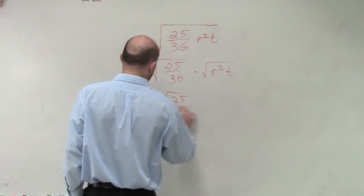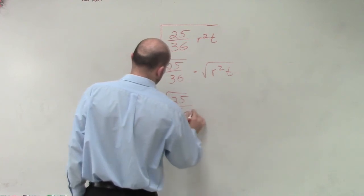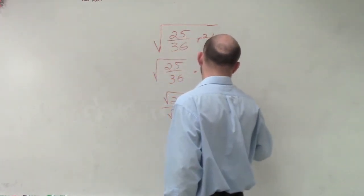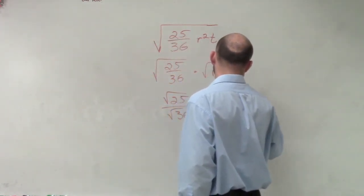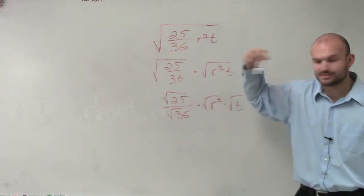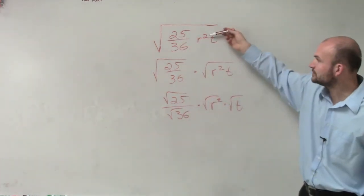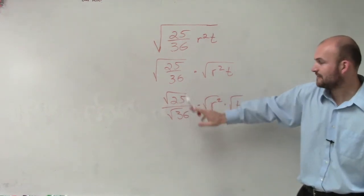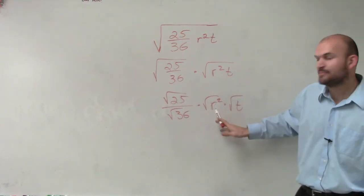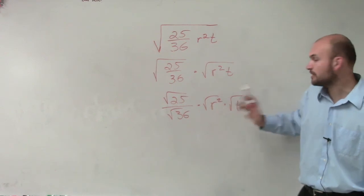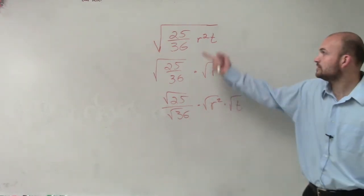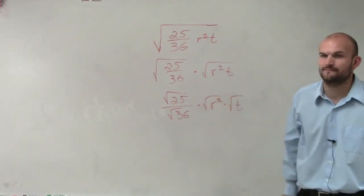In reality, all I'm doing with this problem — if you can think about this in your head — is taking the square root of 25 divided by the square root of 36, multiplying that by the square root of r squared, and then multiplying that by the square root of t. So when you look at this, that's what you're doing.